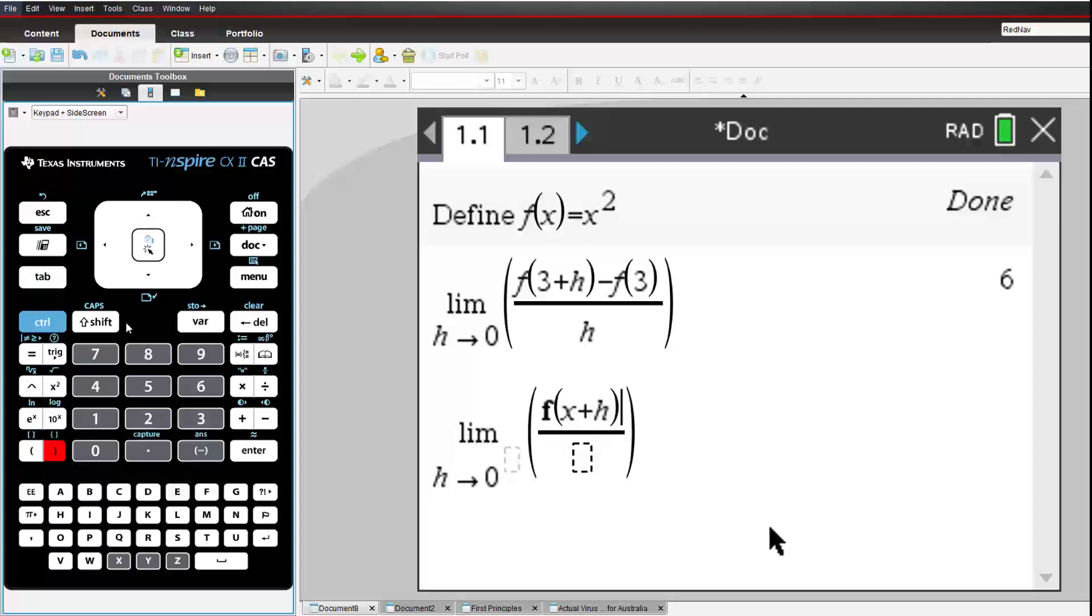So, as h approaches 0, the gradient at any point x on the curve y equals x squared approaches 2x. In the limiting case, we say that the gradient of y equals x squared is equal to 2x.